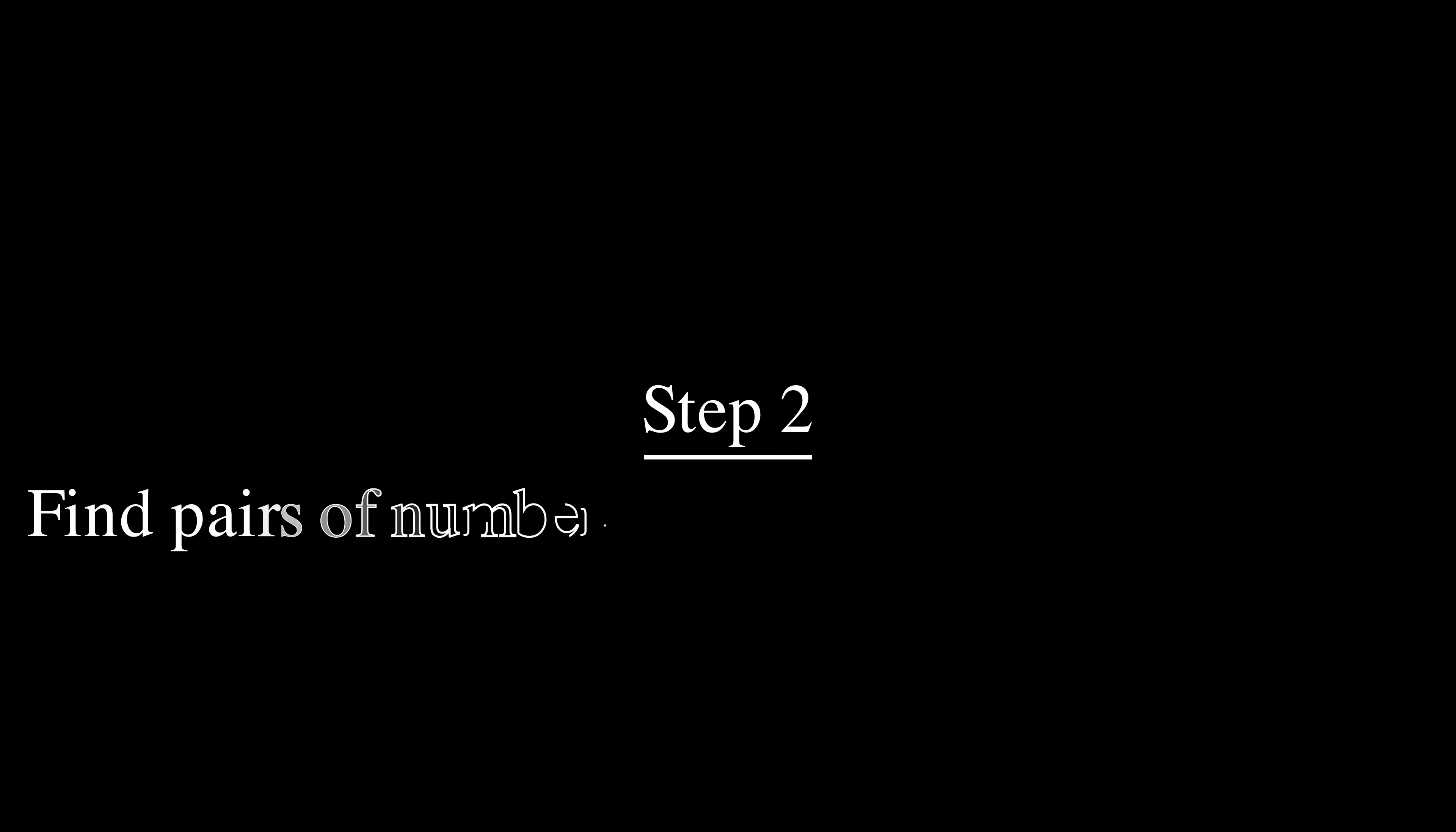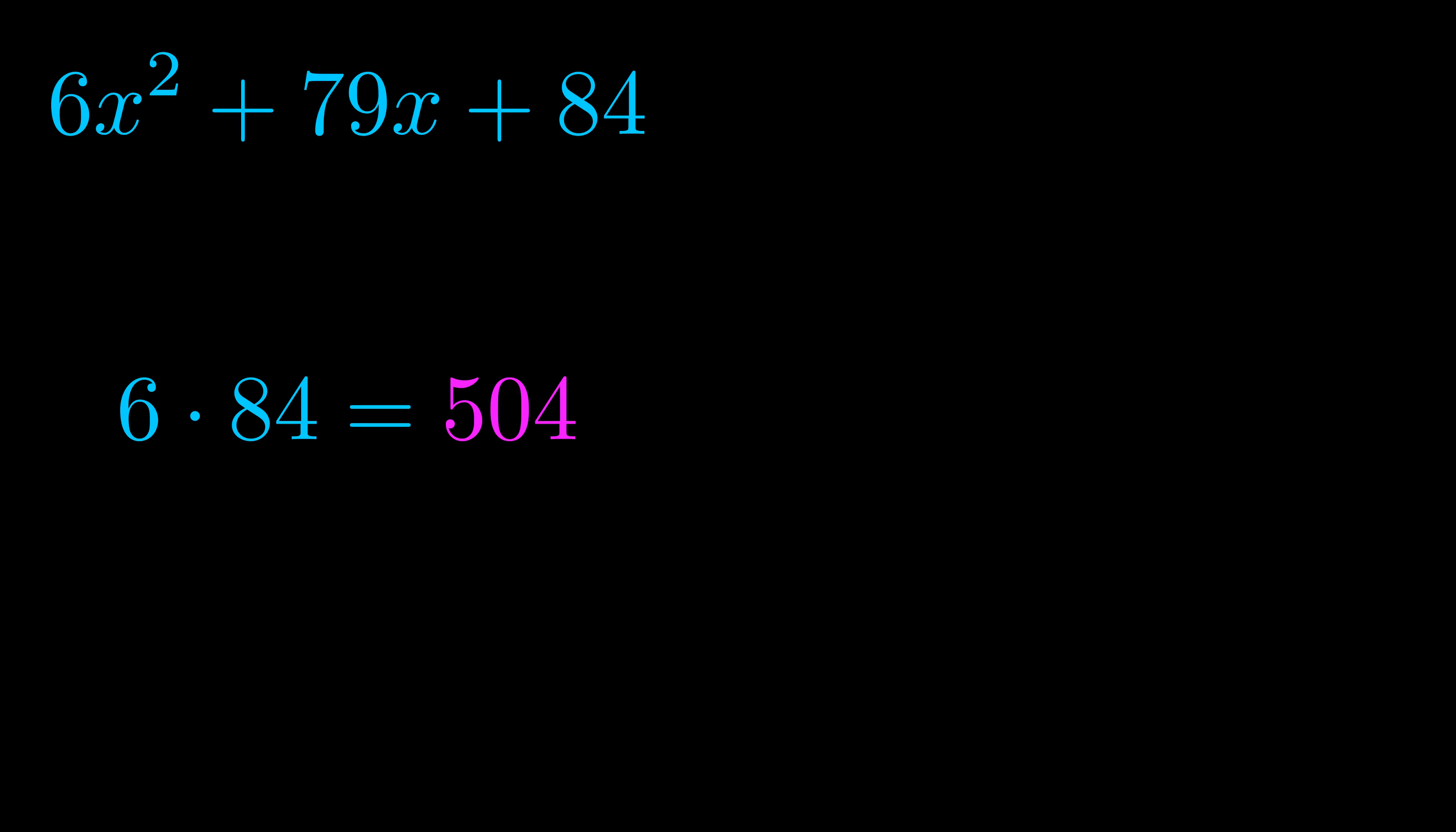Step two is to try to find all of the pairs which multiply to this number. Now turns out you don't really need to find all of them, but go ahead and write down as many numbers as you can that multiply to the magenta value for now. Pause the video and resume when you're ready to continue.